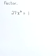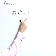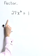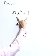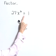Factor 27x to the sixth plus one. Here notice that there is no greatest common factor to take out of those terms. Also notice that we have two terms with a plus sign in the middle.